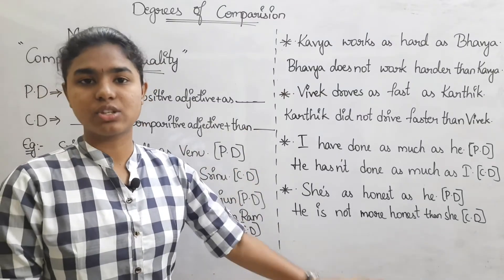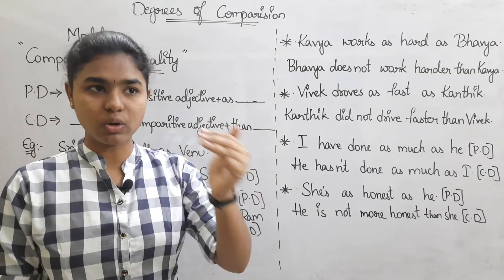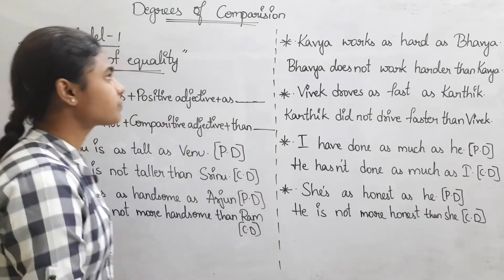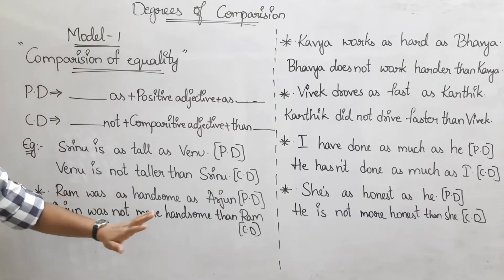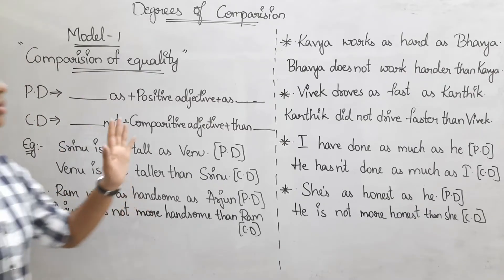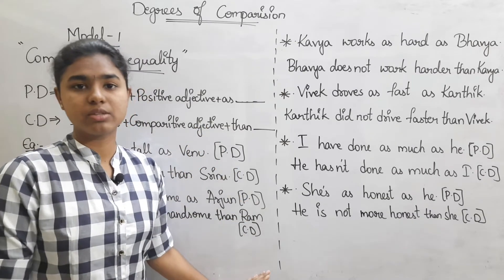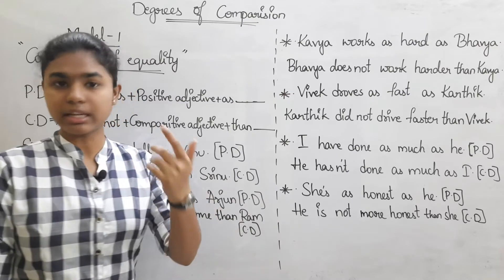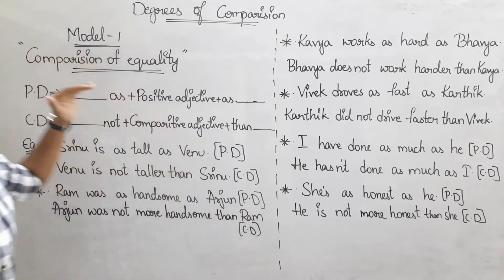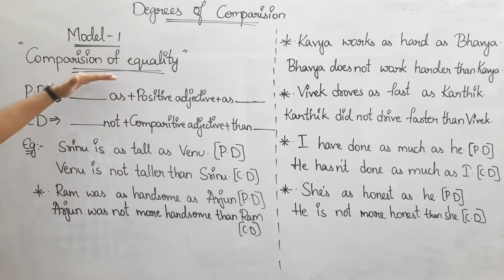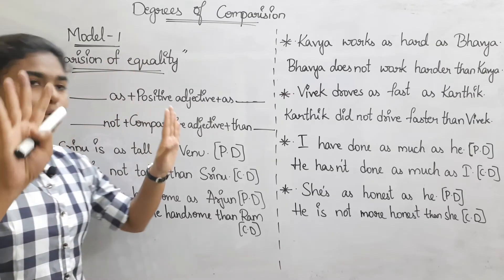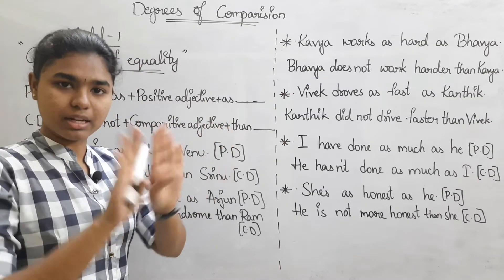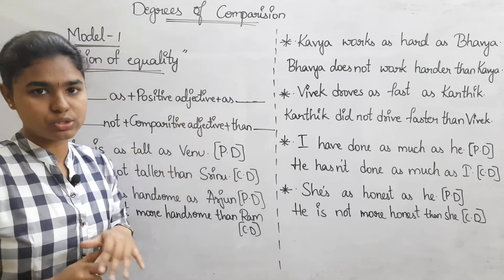When we transfer the sentence, we will check these three things: meaning, tense, and content words stay the same. So first, we compare equality — two things that have equal values. When we compare this model, we use 'as...as'. This covers both positive and comparative degree.